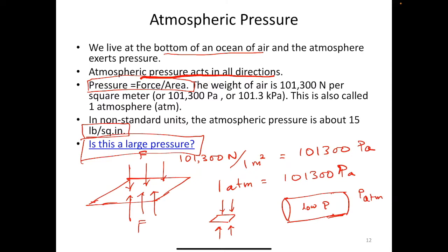With atmospheric pressure on the outside and much lower pressure on the inside, the force from outside in is much greater than from inside out. As discussed, whenever there is a pressure difference, the net force equals area multiplied by the pressure difference: F = A × ΔP. The area is large and ΔP is large because the inside pressure is very low, so the net force is enormous enough to completely crush the train compartment.